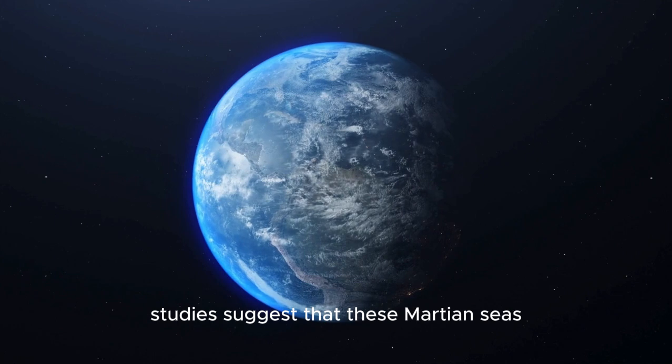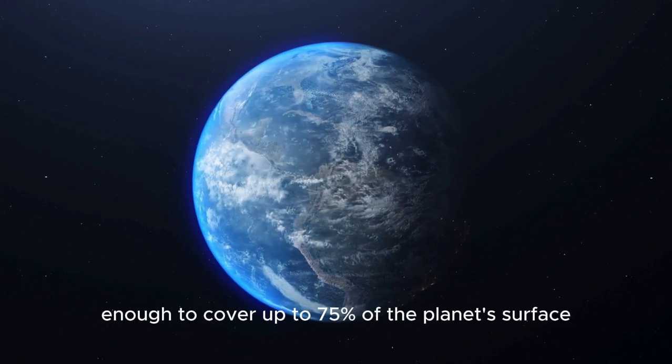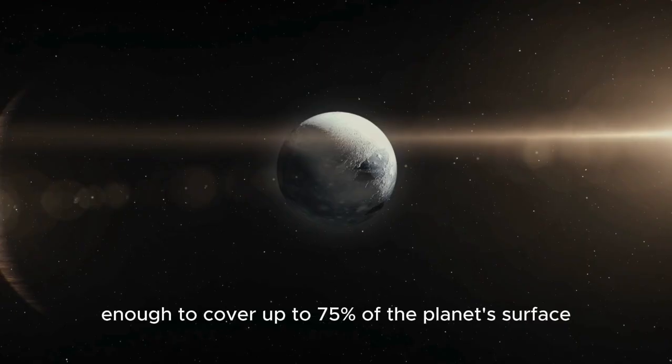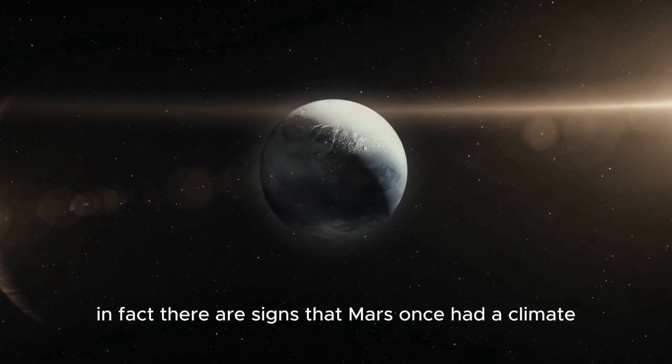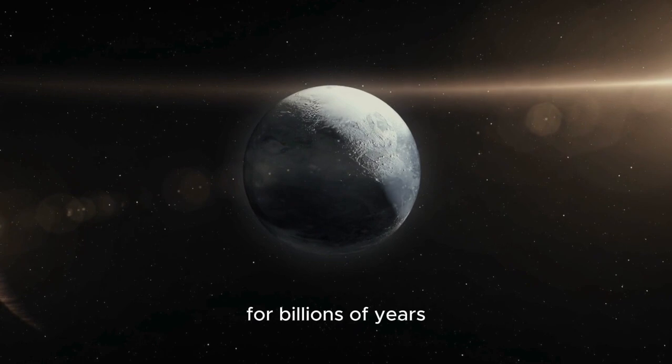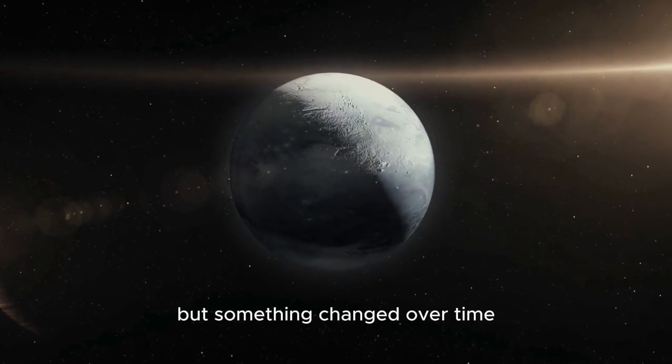Studies suggest that these Martian seas might have been vast enough to cover up to 75% of the planet's surface. In fact, there are signs that Mars once had a climate capable of sustaining liquid water for billions of years. But something changed.